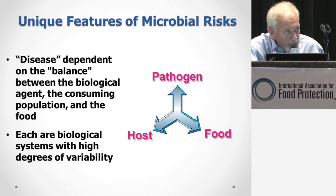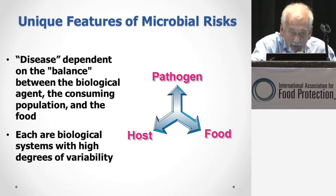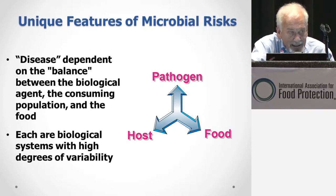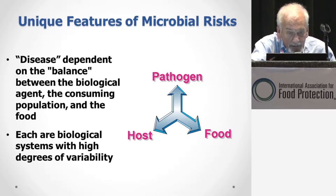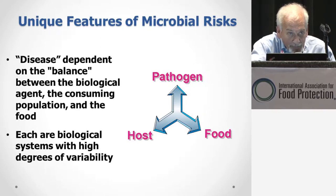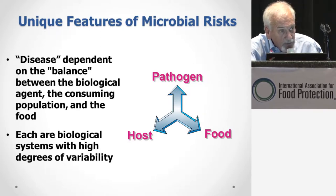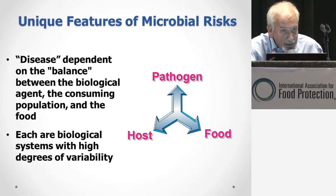When talking about a microbial disease, you're really talking about a balance between three different biological entities: you have the biology of the pathogen, you have the biology of the consuming host — which in this case is going to be a human — and then you also have the biological variability of the food. Each of these are biological entities that have a high degree of variability.